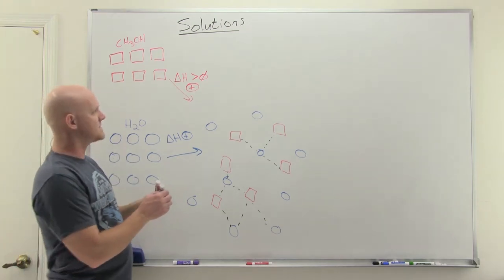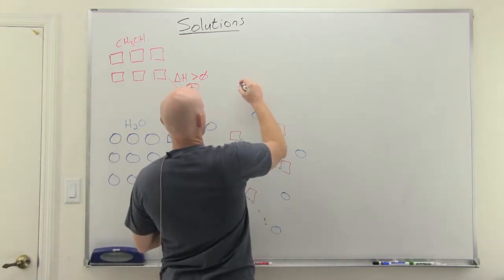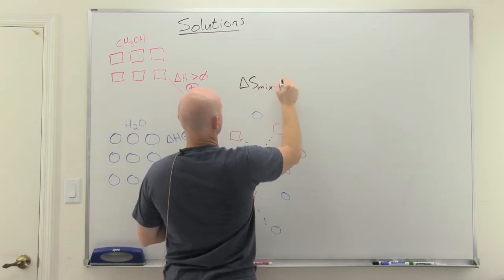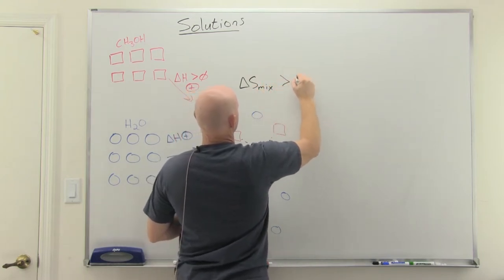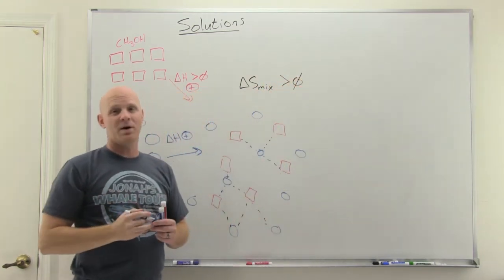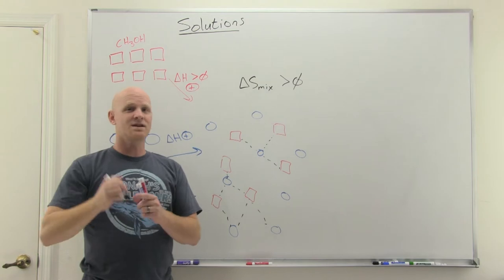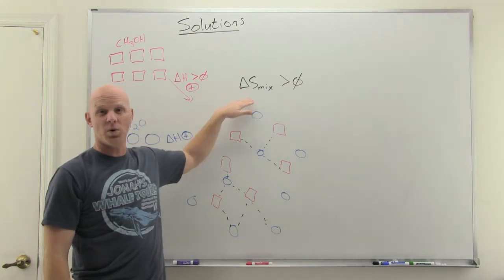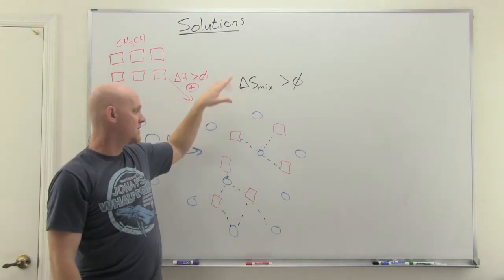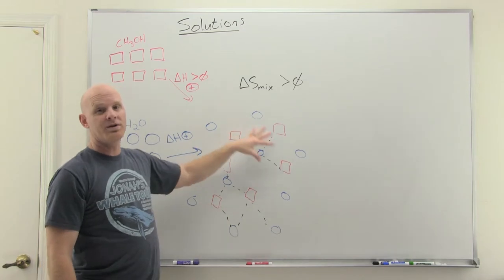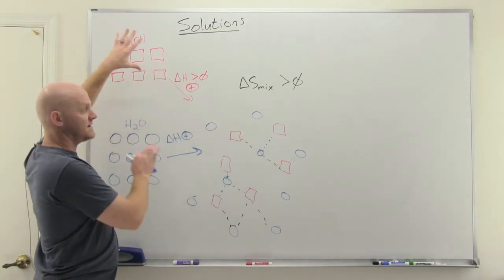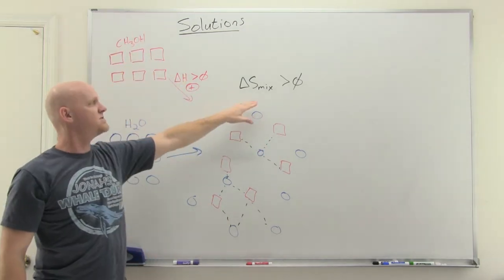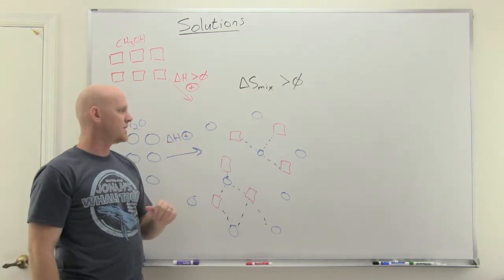What governs the process in cases where delta H is near zero is the delta S of mixing — entropy. When you have a mixture, you have more disorder than with pure solute and pure solvent separately, and this increased entropy is usually what drives mixing.